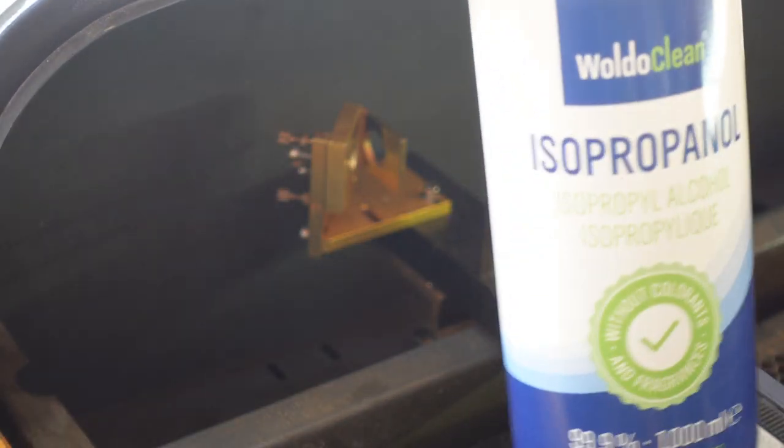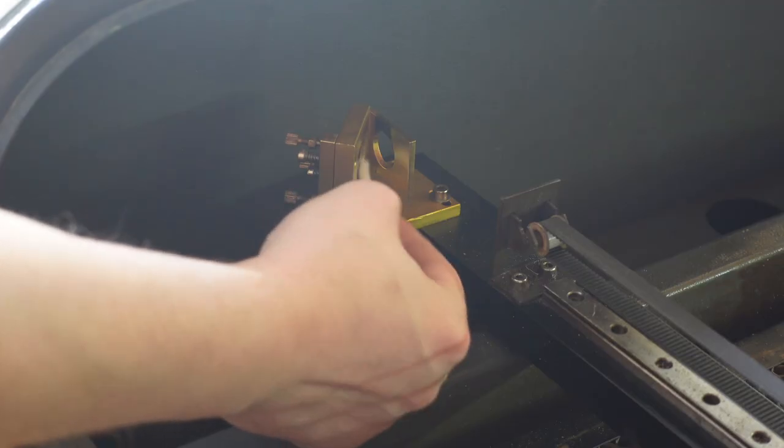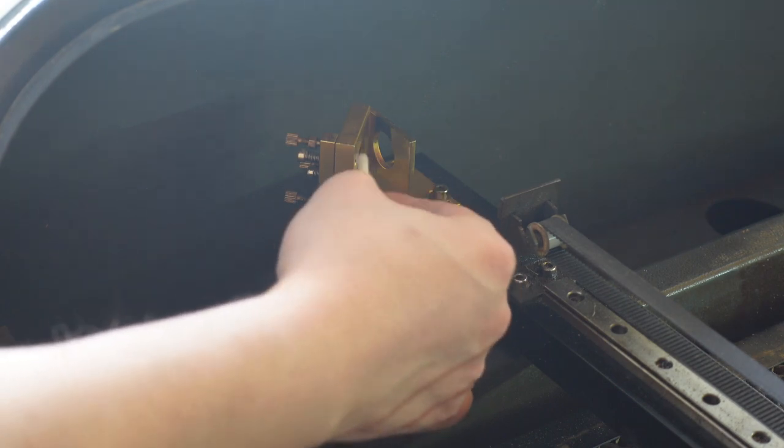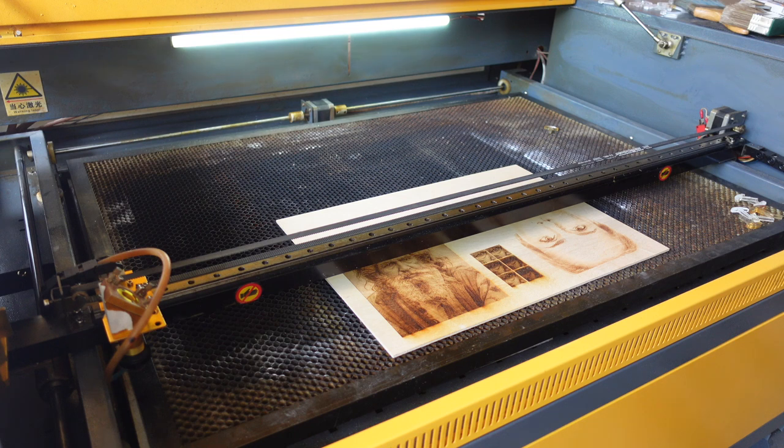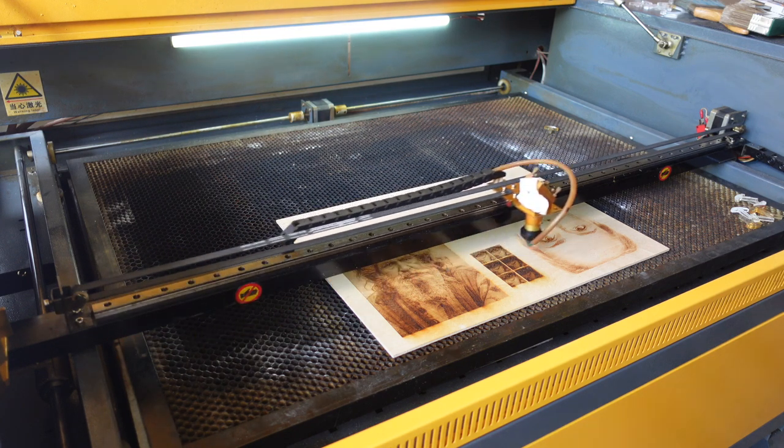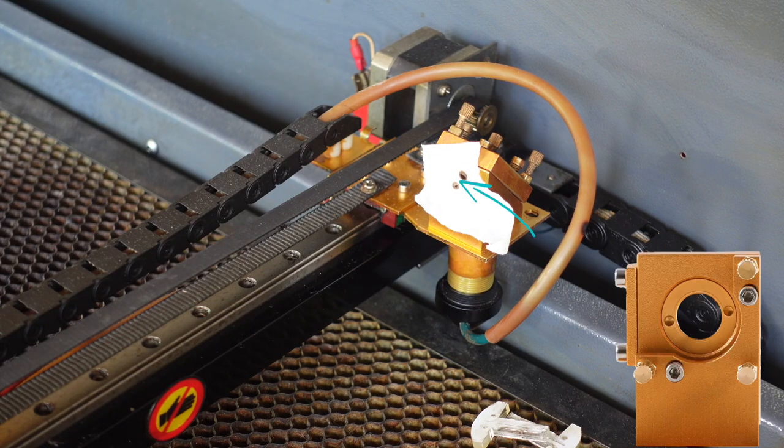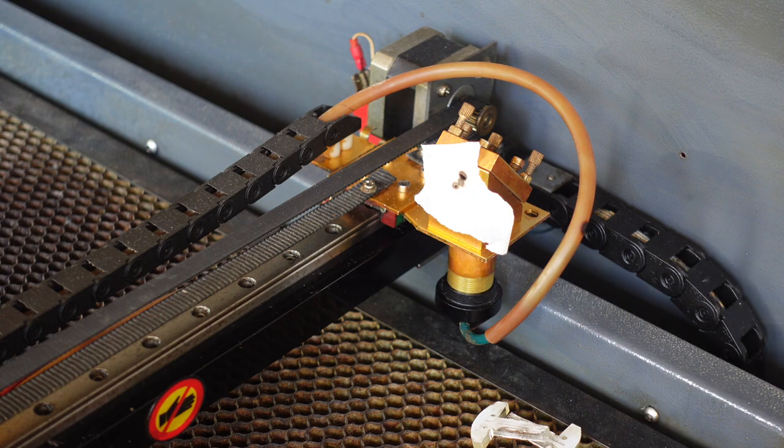Now we will clean mirror two from any residues due to the duct tape and repeat the whole process for mirror two. It is basically the same steps as on mirror one. It means first go to the nearest point of mirror two and then to the most distant point. Compare the two burn marks and adjust the beam in the middle of them.